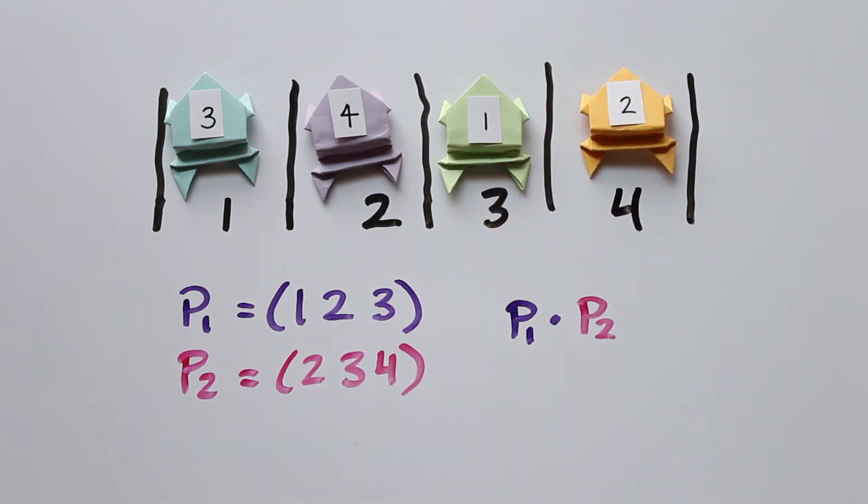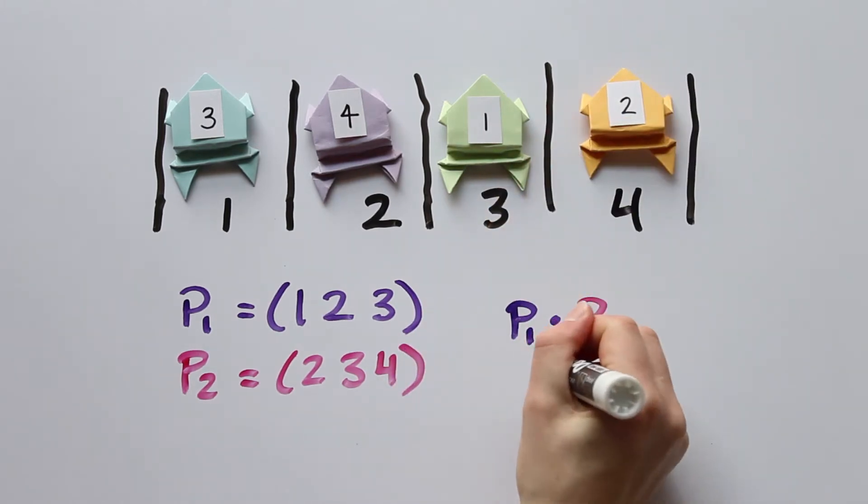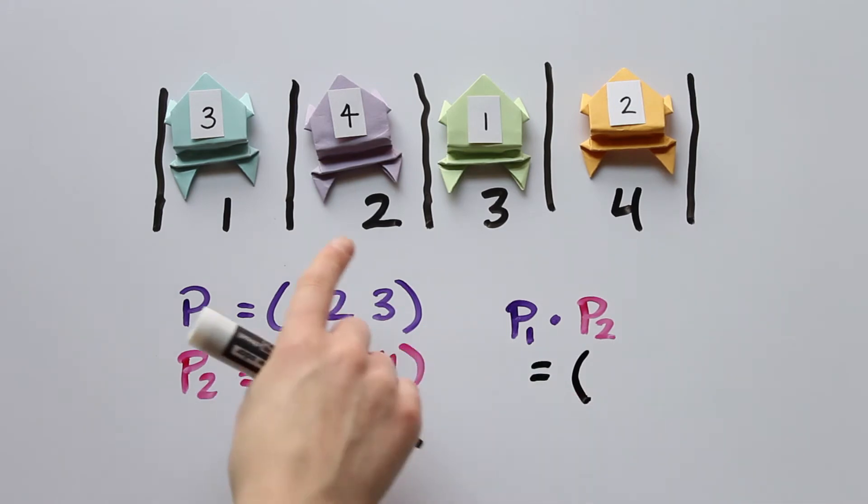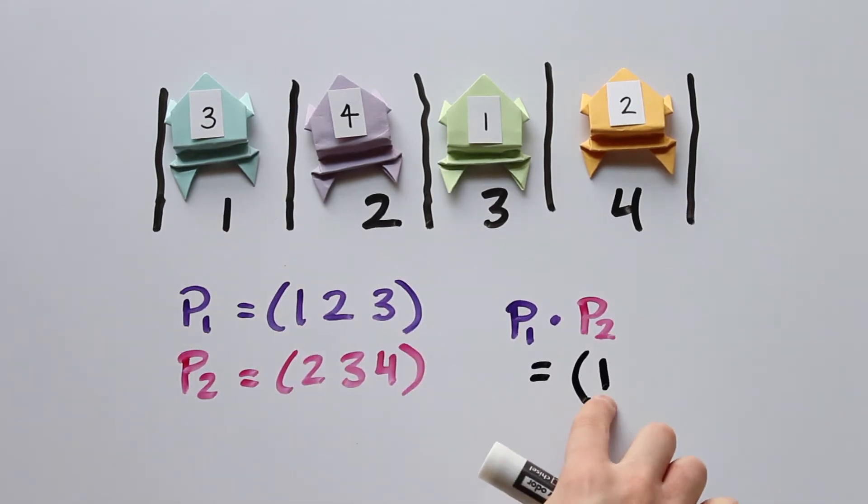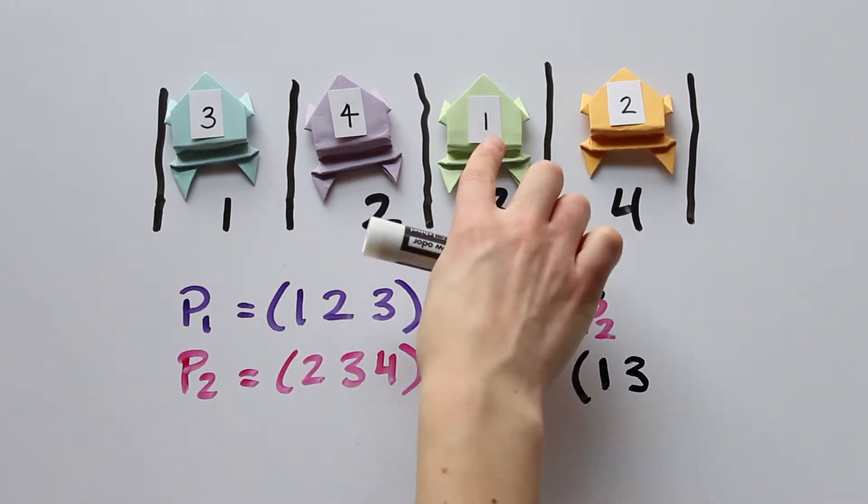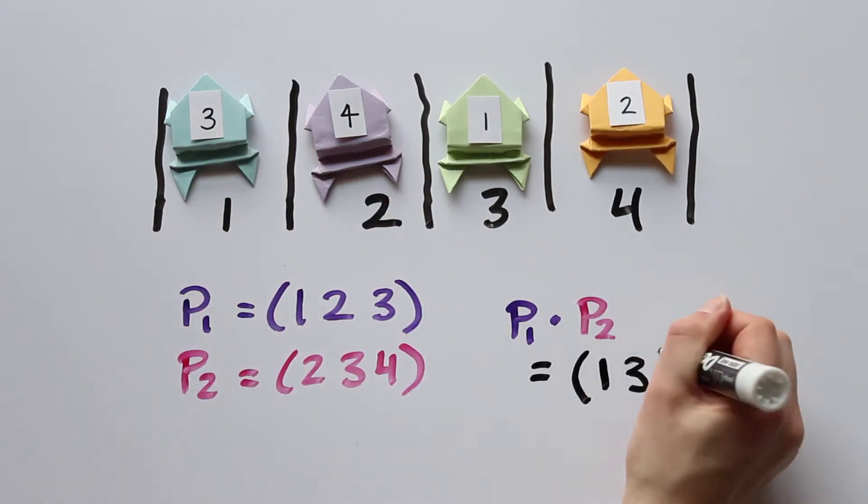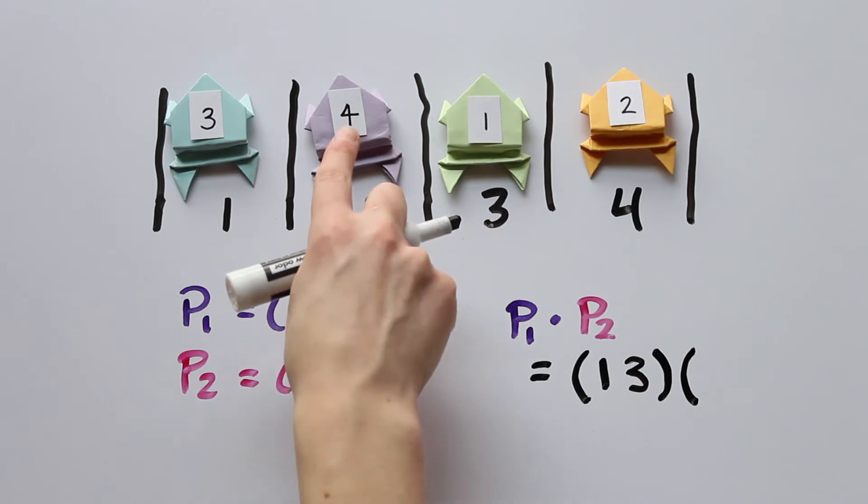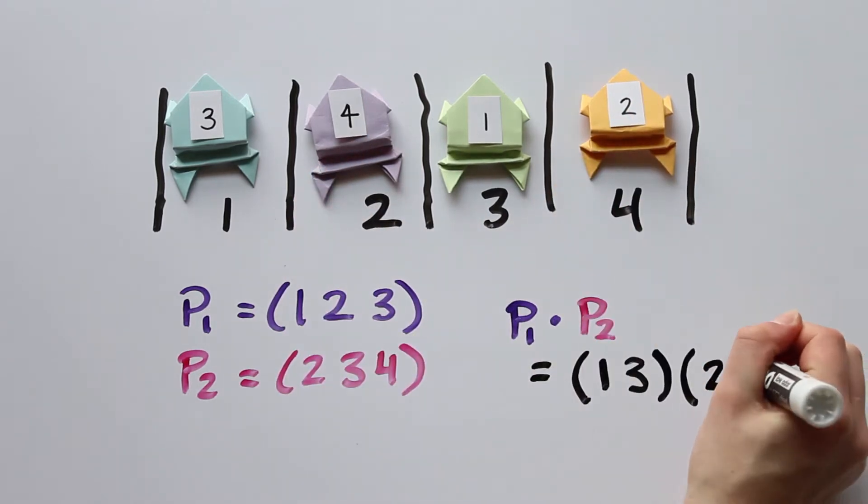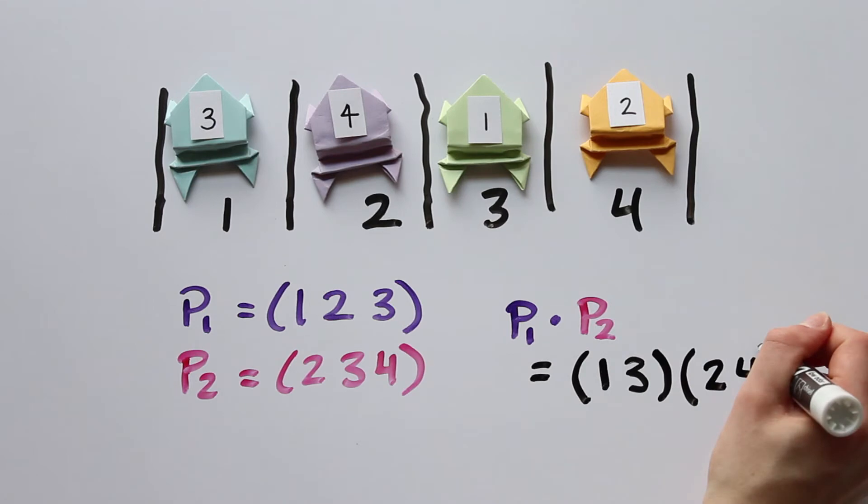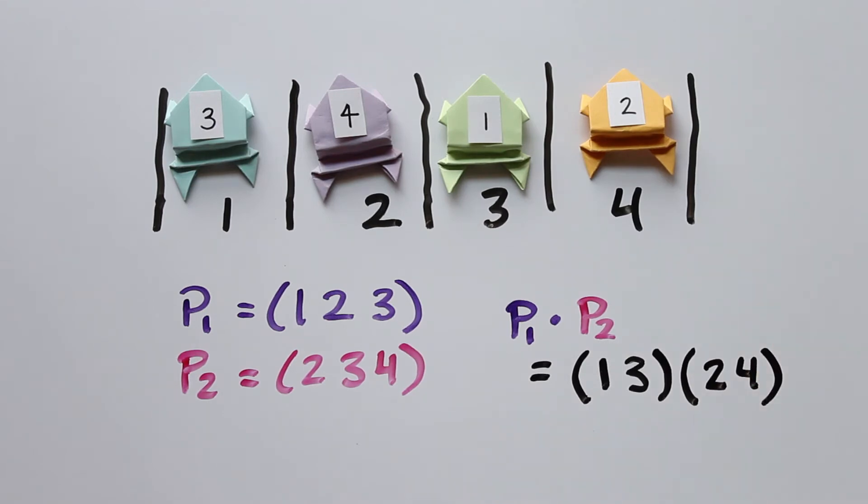Now we can write the resulting permutation. See that frog 1 is in place 3, so we start by writing 1, 3. Then frog 3 is in place 1, so this cycle ends. Next, we see that frog 2 is in place 4, we write 2, 4, but frog 4 is in place 2, so this cycle also ends. Hence, we see that p1 times p2 is the permutation 1, 3, 2, 4.